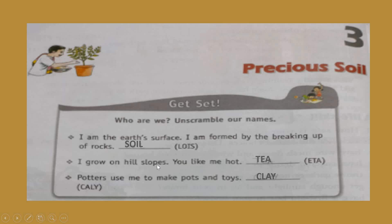Second: I grow on hill slopes, you like me hot. Who am I? The answer is tea. Third: potters use me to make pots and toys, and the answer is clay.